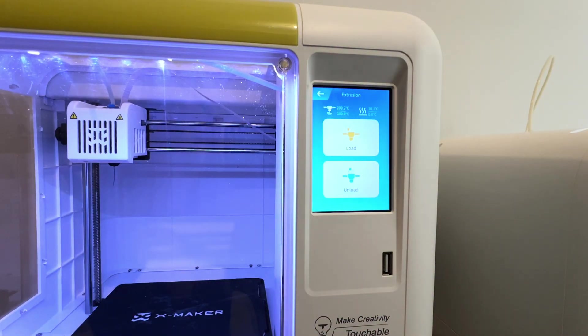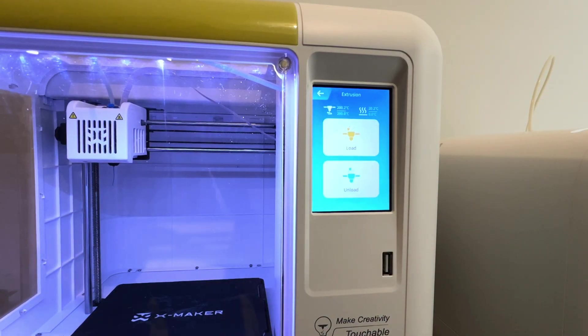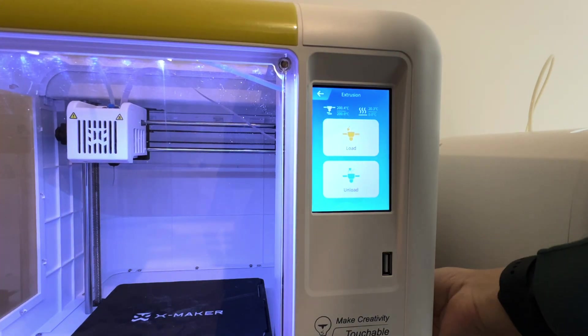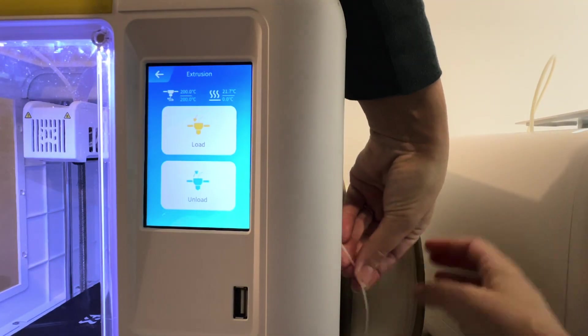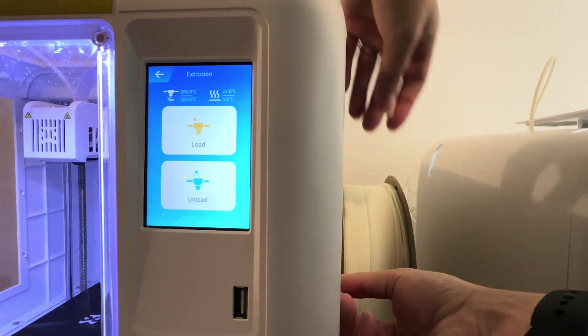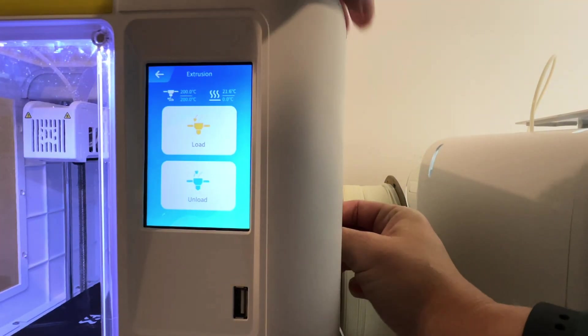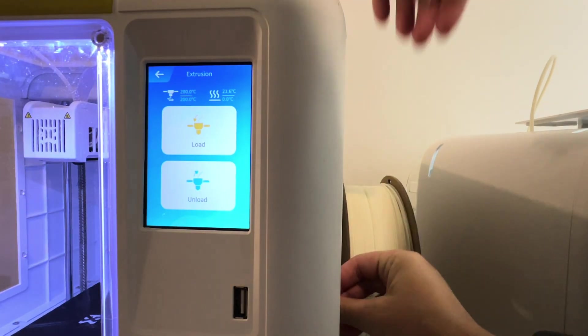We're going to unload the filament. If you have filament already in, you're going to just need to keep clicking the unload button. It does require several clicks to get it fully unloaded. Then we're going to put on our new filament and thread it through the filament spool there on the side of the Xmaker.